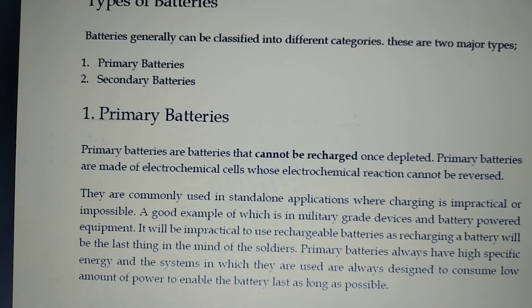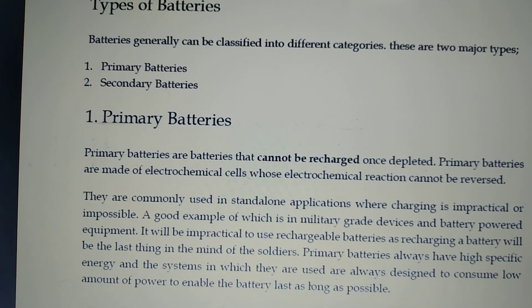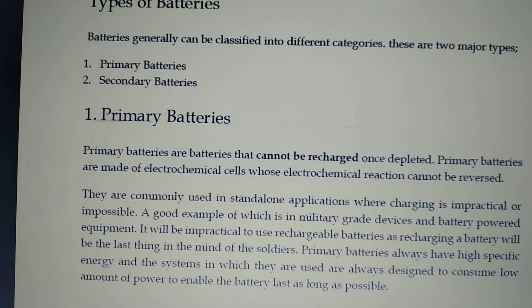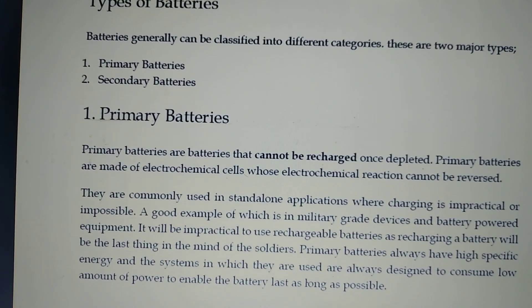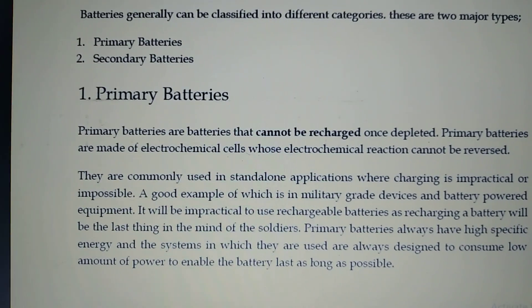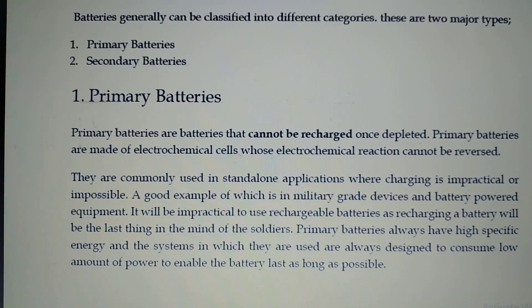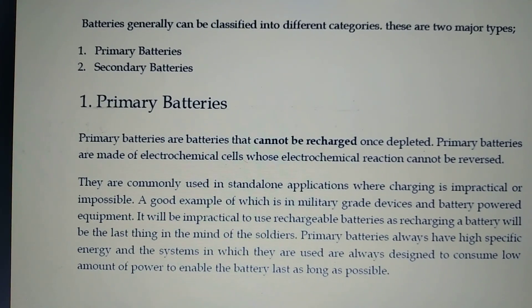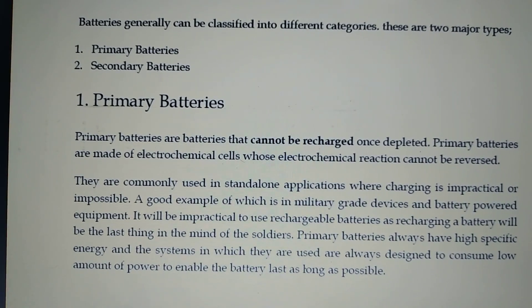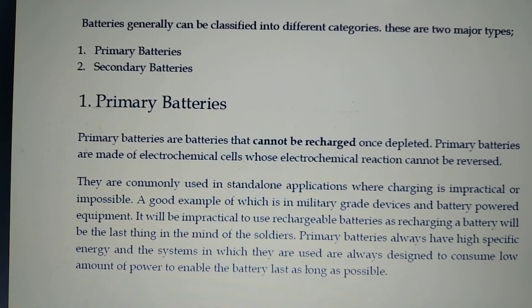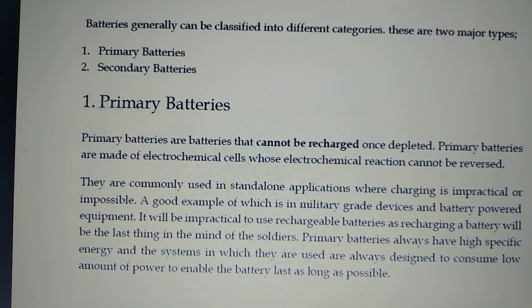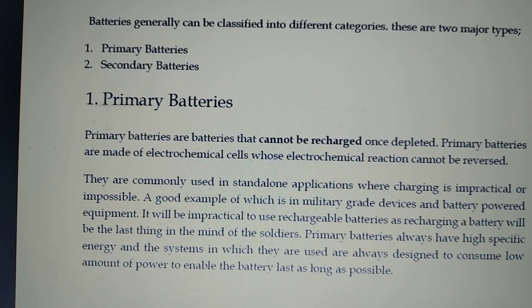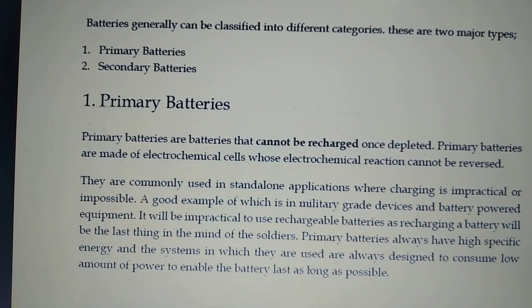Primary batteries are batteries that cannot be recharged once depleted. Primary batteries are made of electrochemical cells whose electrochemical reaction cannot be reversed. These are commonly used in standalone applications where charging is impractical or impossible. A good example is military-grade devices and battery-powered equipment, where it would be impractical to use rechargeable batteries, as recharging a battery would be the last thing on a soldier's mind.